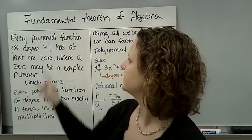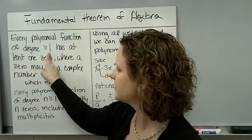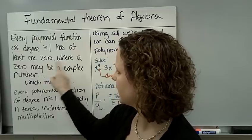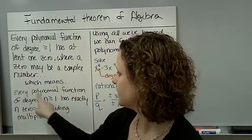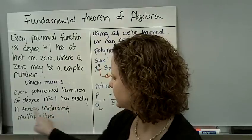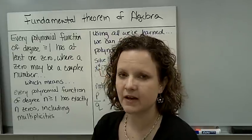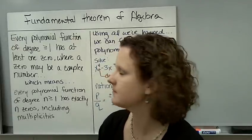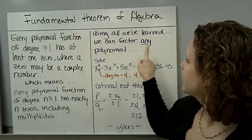The fundamental theorem of algebra. Every polynomial function with a degree greater than or equal to 1 has at least one zero, one root, where a zero may be a complex number. That means every polynomial function of degree n greater than or equal to 1 has exactly n zeros, including multiplicities. We're going to try to find every single one of our zeros now using what we've learned in the previous units, the previous sections. So using all we've learned, we can factor any polynomial.